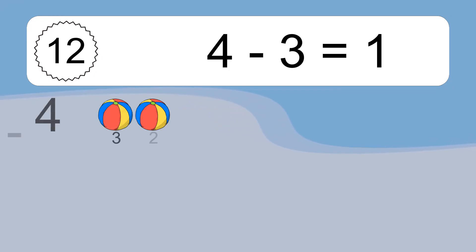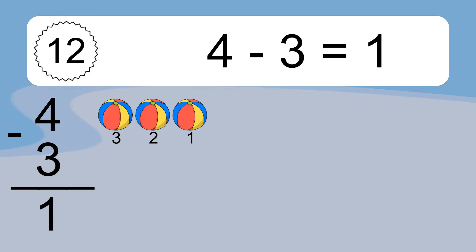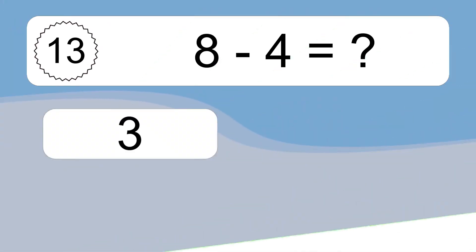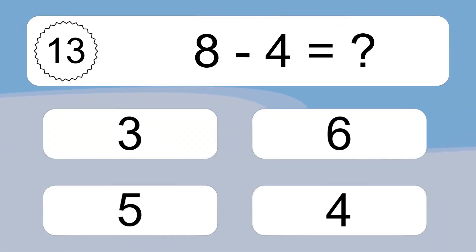4 minus 3 equals what? 4 minus 3 equals 1. Let's count it. 3, 2, 1.